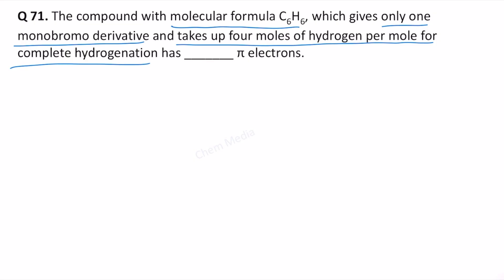Let's determine the degree of unsaturation for C6H6. Degree of unsaturation equals 1 plus the number of carbon atoms minus the number of hydrogen atoms by 2 for a hydrocarbon. Therefore, this equals 1 plus 6 minus 6 by 2, which gives 7 minus 3, equal to 4.